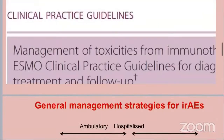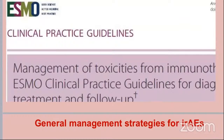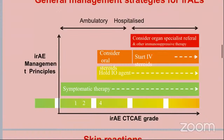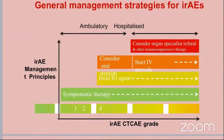According to ESMO guidelines, the management of immunotoxicity: for grade 1 and 2, the patient is mostly ambulatory; grade 3 and 4 should be hospitalized. Symptomatic therapy can be effective in grade 1 only. For grade 2, we hold the immunotherapy agent and consider oral steroids. For grade 3, we start IV steroids. If there is no improvement on IV steroids, we add another immunosuppressive agent, which can also be used in grade 4.